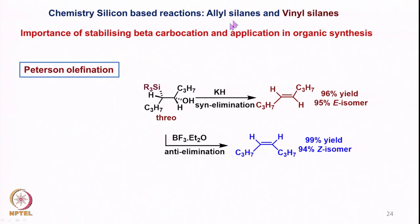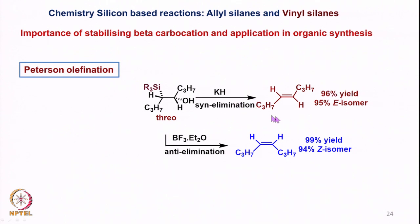Then we looked at silicon-based reactions where allyl and vinyl silanes were used, categorically examining the importance of stabilizing beta-carbocations and their application in organic synthesis. We also looked at the important Peterson olefination reaction: under basic conditions it leads to syn elimination to form one product, and under acidic or Lewis acidic conditions via anti elimination to form a different product.